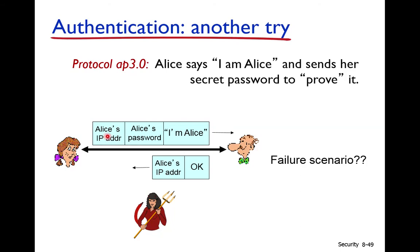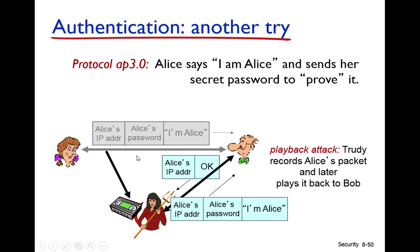This protocol can also fail. Suppose an attacker (Trudy) is listening — she notes Alice's password and Alice's IP address. After the exchange, Trudy sends a message to Bob using Alice's password and Alice's IP address. Bob will assume the message is coming from Alice, but it is actually coming from Trudy, the attacker.